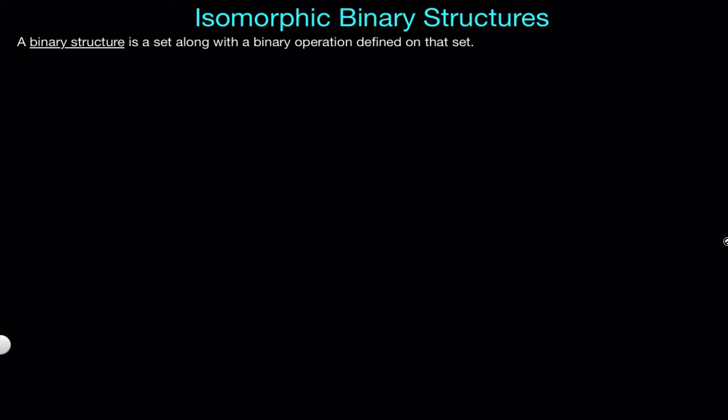Now, a binary structure is just a set along with a binary operation defined on that set. For example, the set of integers along with the addition operation is a binary structure. You will usually see a binary structure written in this format where we have the set S and the binary operation star. And for simplicity, we will just call this structure S. So whenever we see a structure, we will refer to it by the name of the set.